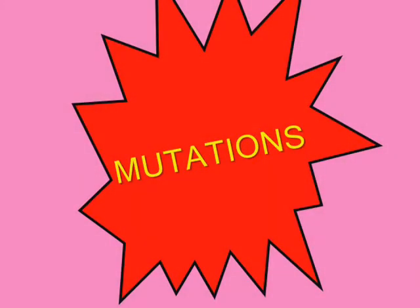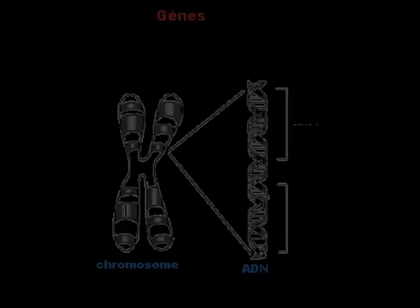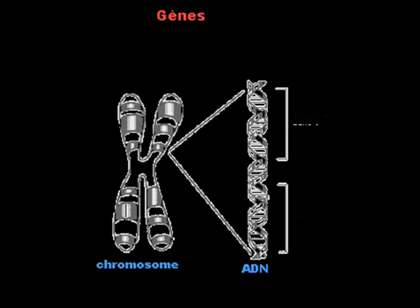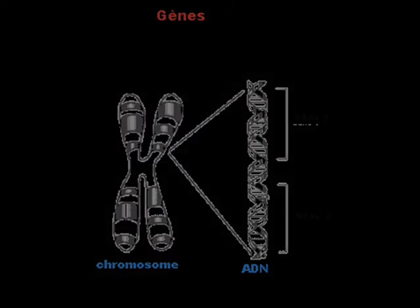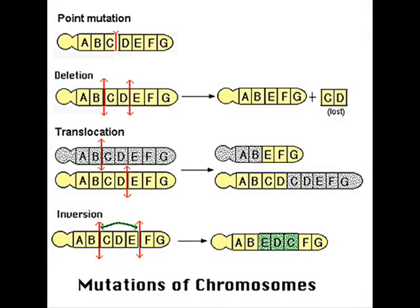Let's go. Mutations. Let's start from the beginning. Mutations may be classified as chromosomal alterations or gene mutations. There are different types of mutations. Number one: Addition, or point mutation, is when a portion of one chromosome is attached to another chromosome.